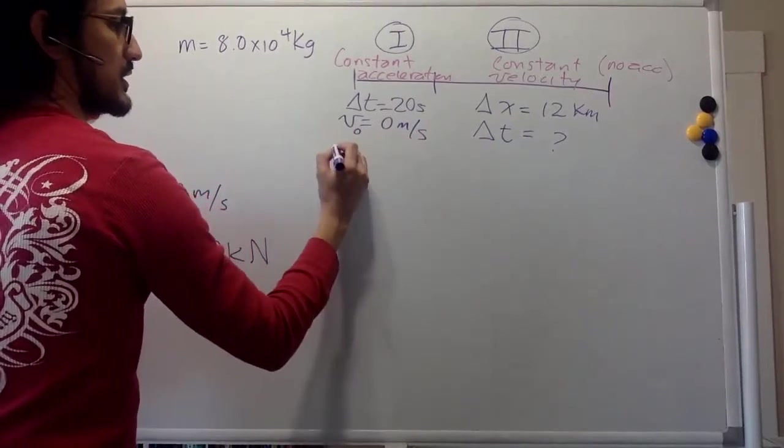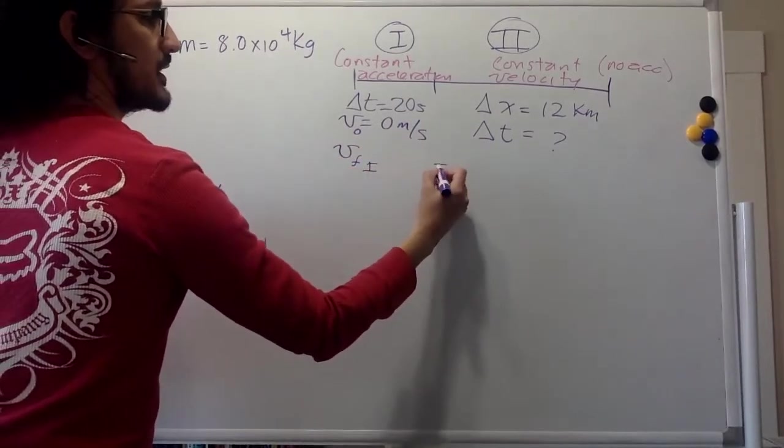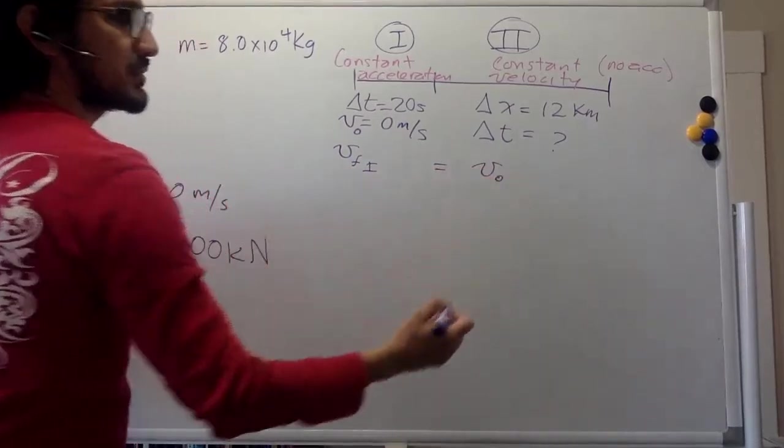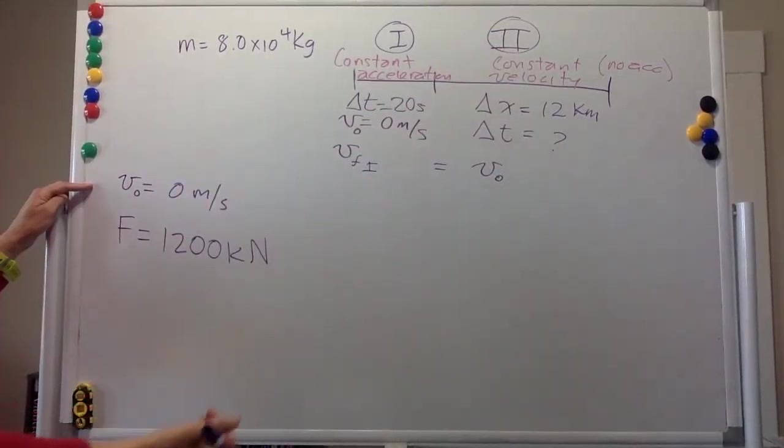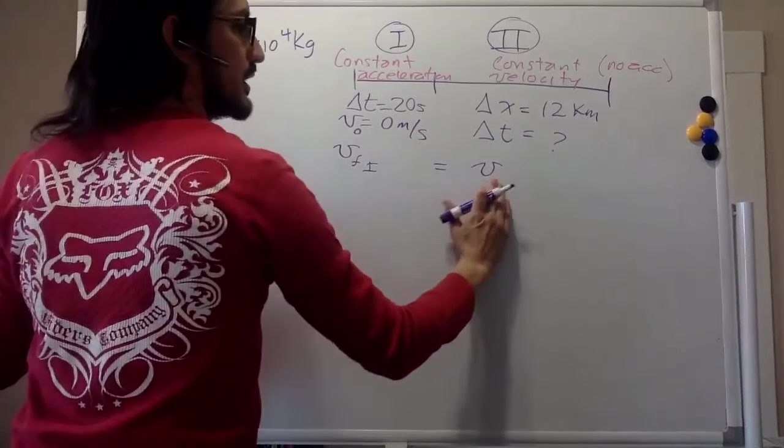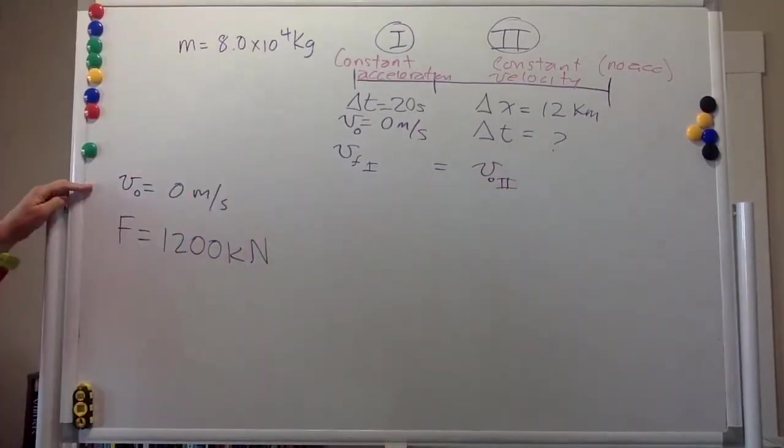But the final velocity of section 1 is equal to the initial velocity. And because the velocity is constant, equal to just the velocity in section 2. All right.